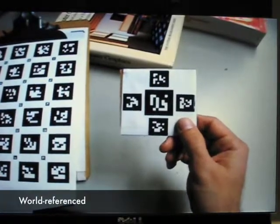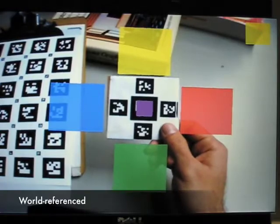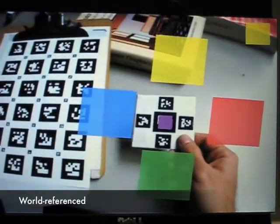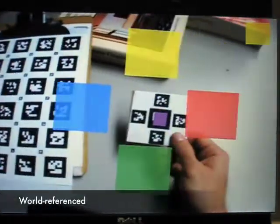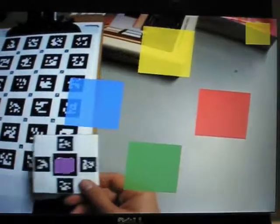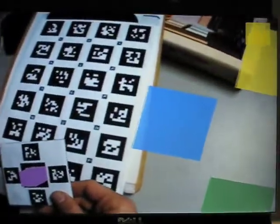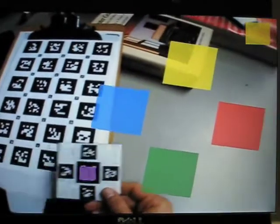In the world-referenced condition, menus are displayed attached to the world coordinate system, derived from a secondary fiducial array. In this case, neither moving the head nor moving the fiducial moves the menus.